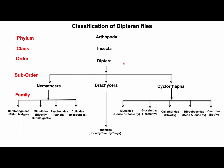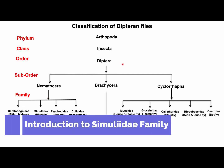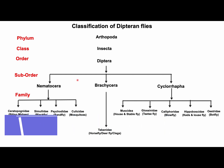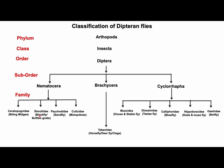This is the classification of dipterine flies. We study different medically or veterinary important arthropods under the suborder Nematocera, Brachycera, and Cyclorrhapha. Here you can see the different important families under these suborders. Flies under the Simuliidae family are commonly known as black fly or buffalo gnats. In this lecture, I'll discuss about black flies.